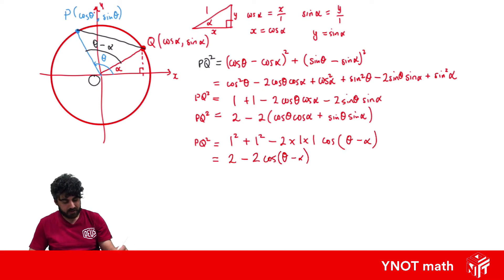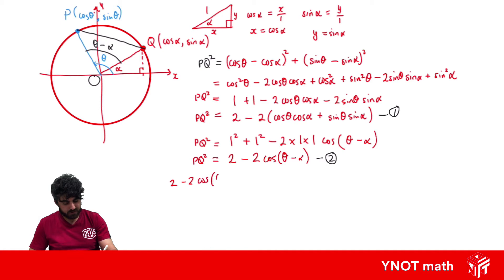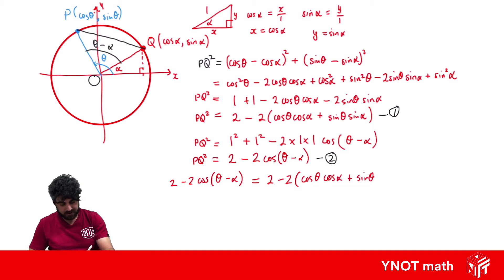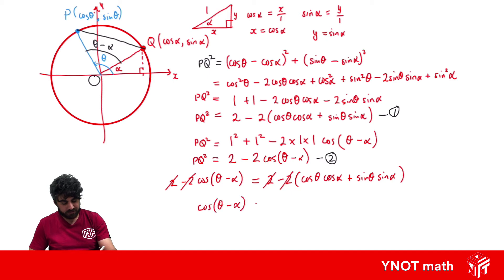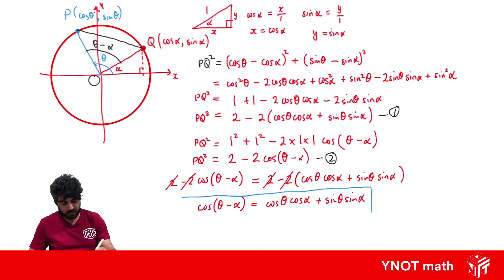Now we equate the two expressions for PQ squared: 2 minus 2 cos(θ − α) equals 2 minus 2(cos θ cos α plus sin θ sin α). Subtracting 2 from both sides and dividing by negative 2, we finally get our first compound angle result: cos(θ − α) equals cos θ cos α plus sin θ sin α. This gives us an expression for the cosine of the difference of two angles.